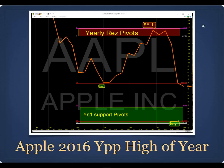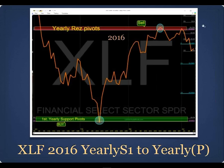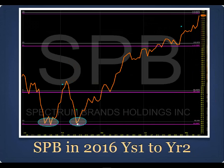The XLF, the bank ETF, came right down to its yearly S1 pivot in February 2016, then rallied six weeks later all the way back up to its yearly pivot — a great trade. Here's SPB, Spectrum Brands. It did a double bottom in January and February right on the yearly S1 pivot at $89-$90. It's at $120 today, up 30%. For IRA accounts, these are great trades — you can grow your IRA 20, 30, even 50% a year if you time these pullbacks on yearly pivots.